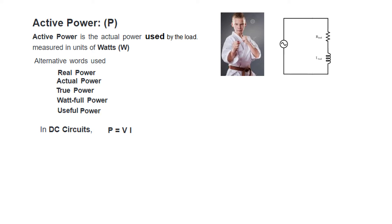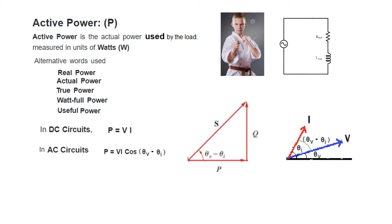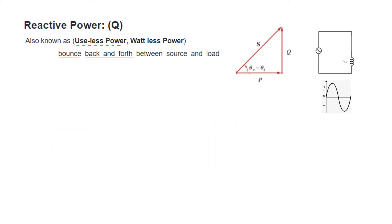For a DC circuit, power is simply V times I. But for an AC circuit we modify the formula: P = VI cos(θV − θI). In the phasor diagram, the voltage phasor makes angle θV and the current phasor makes angle θI, so θV − θI is the angle between voltage and current.